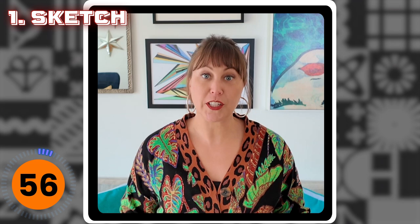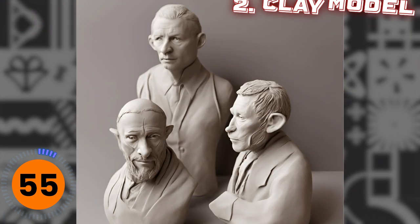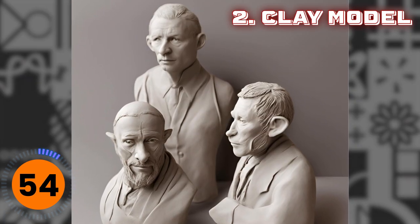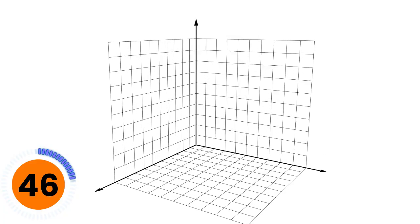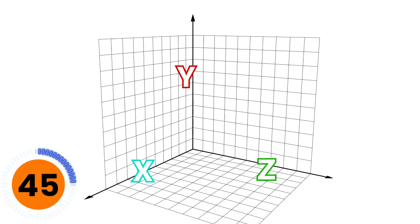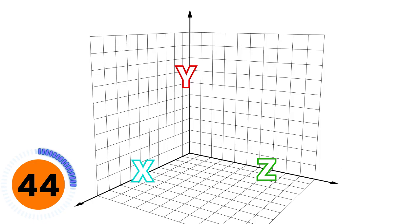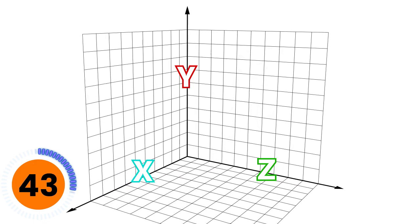When a character is created in animation, it starts with a sketch and then is usually turned into a clay model, which is a 3D model of what the character might look like. But a computer can't use either of those. So what happens next? A 3D modeler will use a computer program with an XYZ axis — so three separate planes — to create a 3D image.